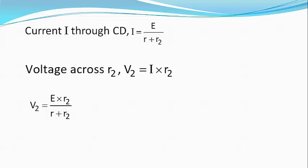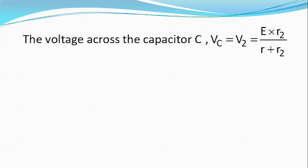Since the branches AB and CD are parallel to each other and there is no current in the branch AB, it is clear that the voltage across the capacitor, that is Vc, equals the voltage across the resistor R2. Therefore, Vc equals V2, which is equal to E into R2 divided by R plus R2.